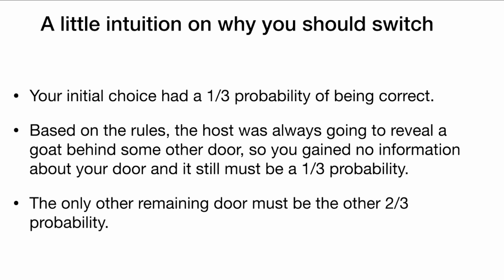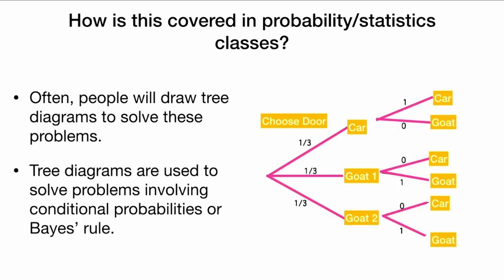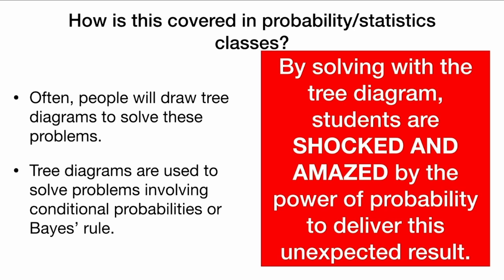So here's a little intuition on why we should switch doors. Your initial choice had a one-third probability of being correct. Based on the rules, the host was always going to reveal a goat behind some other door, so you gained no information about your door, and it still must be a one-third probability of winning. The only other remaining door must therefore be the other two-thirds probability of winning. This is usually covered in an intro probability and statistics class, where people draw tree diagrams to solve the problem and show that it is better to switch. By solving with a tree diagram, students are shocked and amazed by the power of probability to deliver this unexpected result.